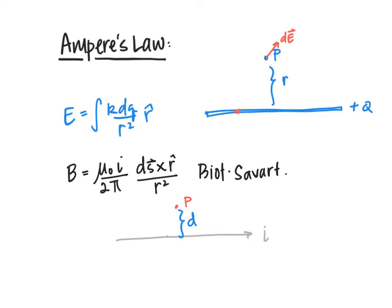You would put your thumb in the direction of the current, and then your fingers would point into the page below the wire and out of the page above the wire. So at point P, your magnetic field would be coming out of the page. The Biot-Savart law allows us to calculate the magnetic field at point P, just as the integral form of the electric field allows us to find the electric field at point P above a charge distribution.